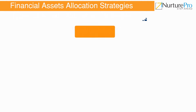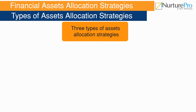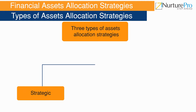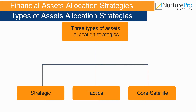Let's look at the types of asset allocation strategies. The three main types are: strategic asset allocation, tactical asset allocation, and core-satellite asset allocation.